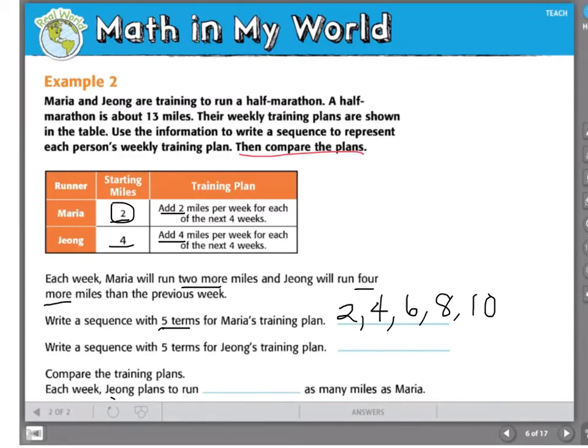Now I'm going to write a sequence to represent Young's training plan. Young will begin with four miles, and his rule is to add four each week. So the second week he would run eight, then twelve, then sixteen, then twenty. Now I have a sequence with five terms to represent Young's training plan.